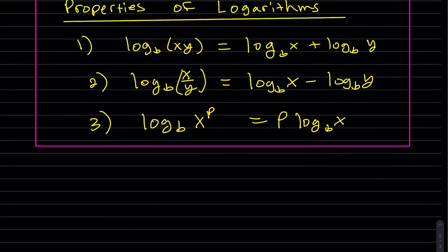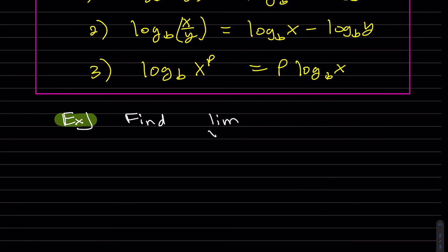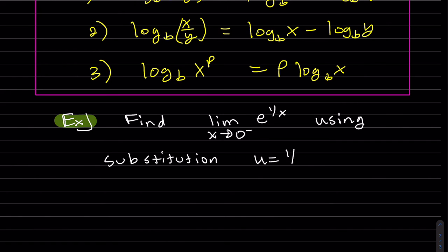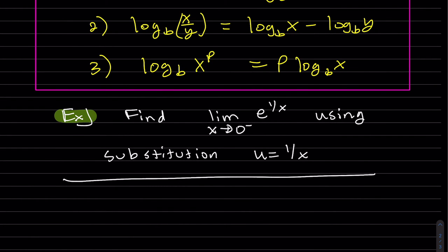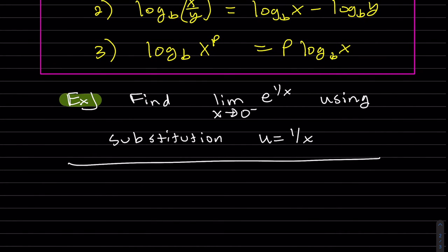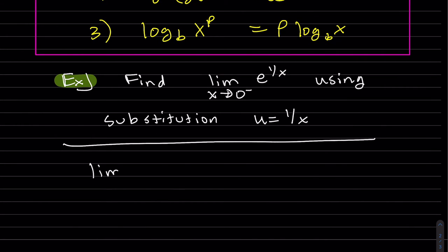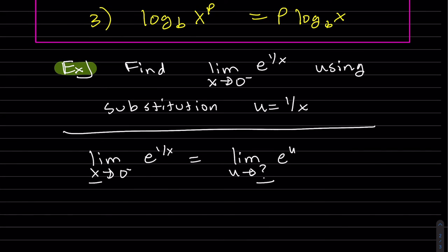I have one more example. Okay, so we want to find this limit using the u sub, since we do have this 1 over x here. So we're going to convert it from x's to u's. That's going to be e to the u. That's simple enough. But we need to figure out what this u is, because we need to switch.